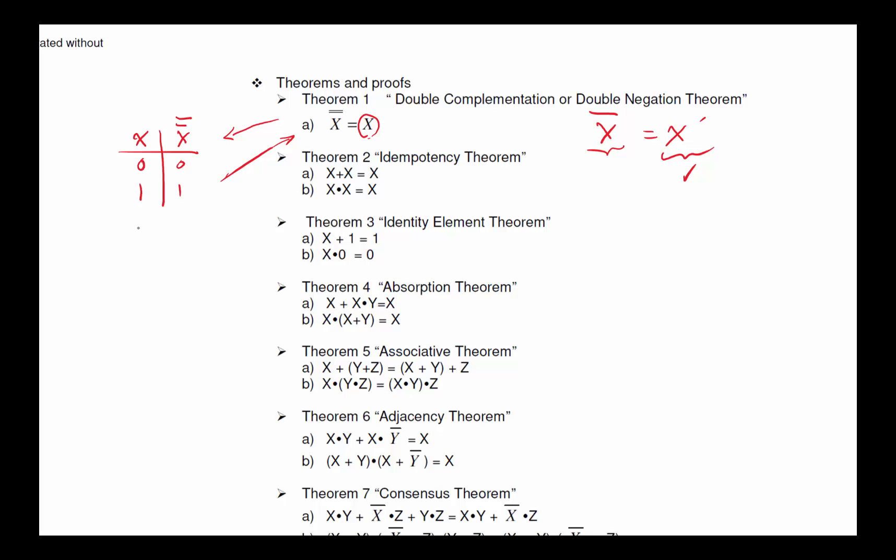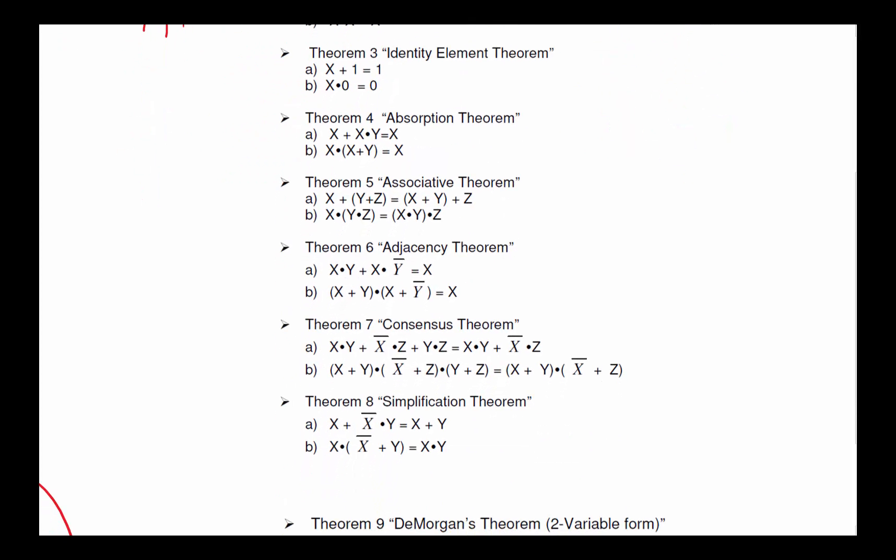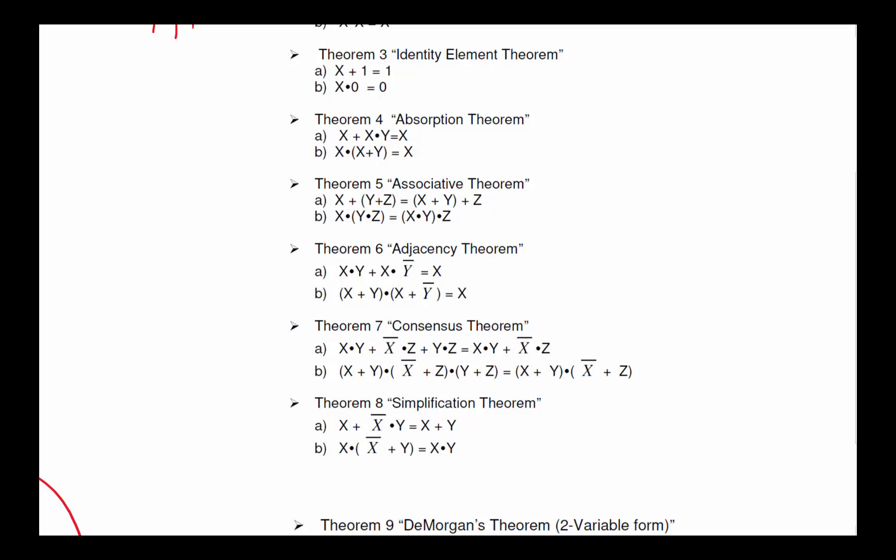Now the next item here is the idempotency theorem, which basically all it says is that if I OR X's together I get an X. Either X is 0 or X is 1. OR it together and you get that. And then the identity element theorem is pretty obvious as well, as you look at those. Absorption theorem just basically points out that if I have an X, you can literally ignore X AND with anything else.